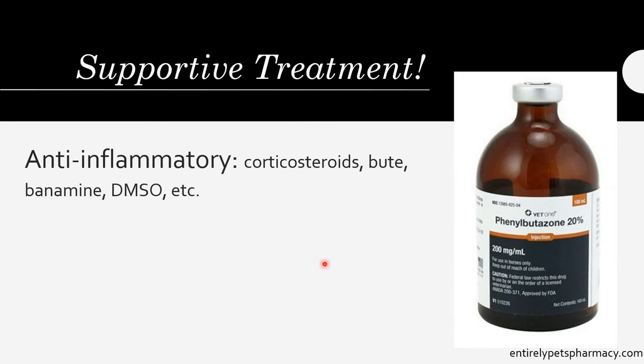You also want to consider supportive treatment — not just treating the protozoa itself, but also treating some of the signs and trying to decrease the negative effects the horse might be feeling. They'll often supplement with vitamin E for neurological problems, and specifically for EPM you're going to want to give anti-inflammatories like corticosteroids, Banamine, and DMSO. Keep in mind you'll probably want to know the long names — phenylbutazone, dimethyl sulfoxide for DMSO, and so on.